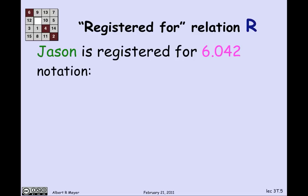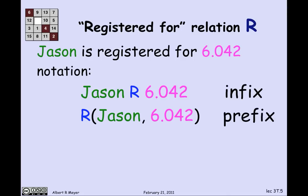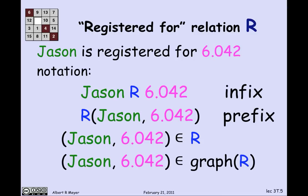There are a bunch of notations used with binary relations. One way is infix notation: Jason R 6042. Another is prefix notation as a binary predicate: R(Jason, 6042). And more formally, you could say the ordered pair (Jason, 6042) is a member of the relation — or more precisely, a member of the graph of the relation.